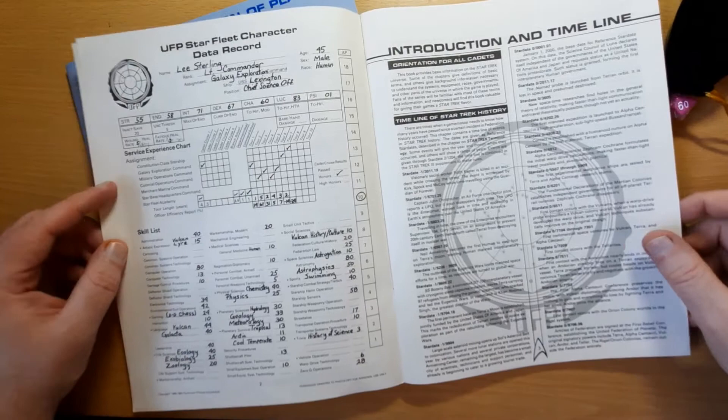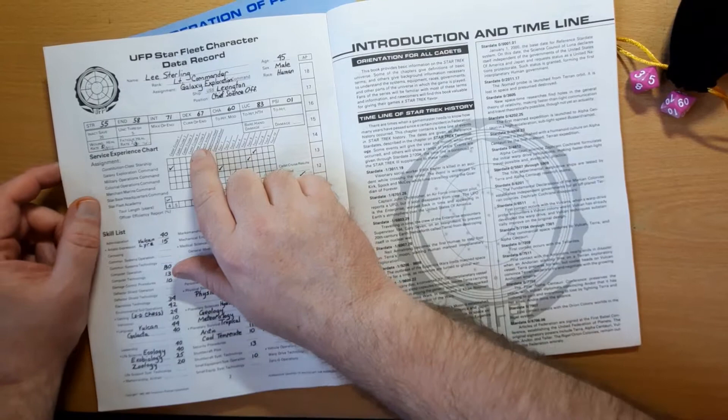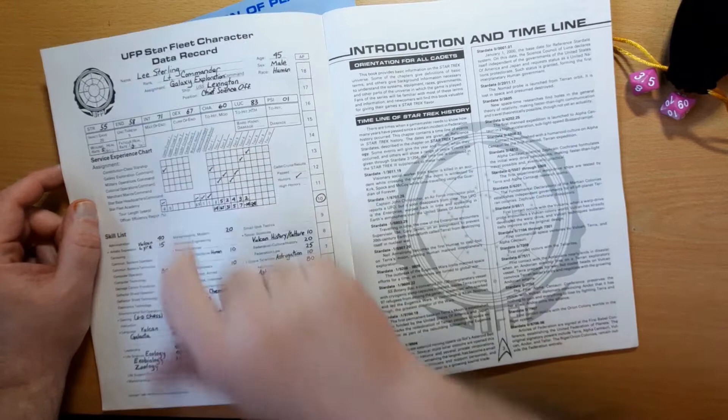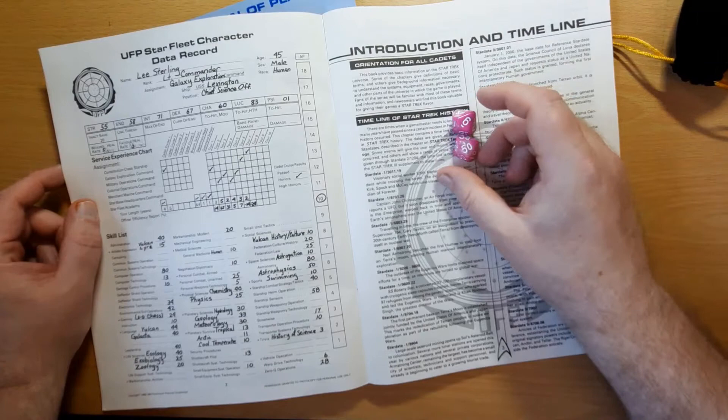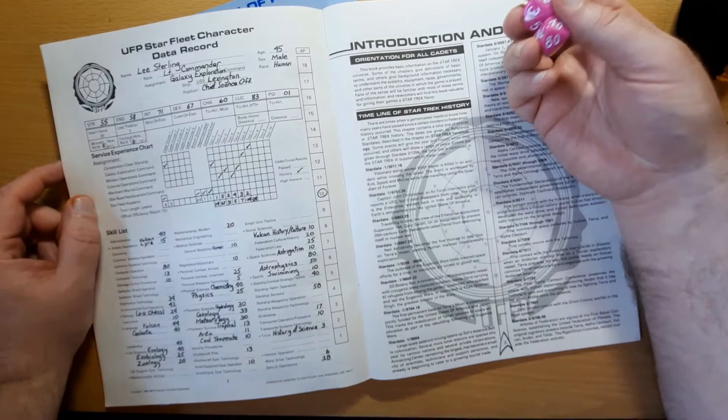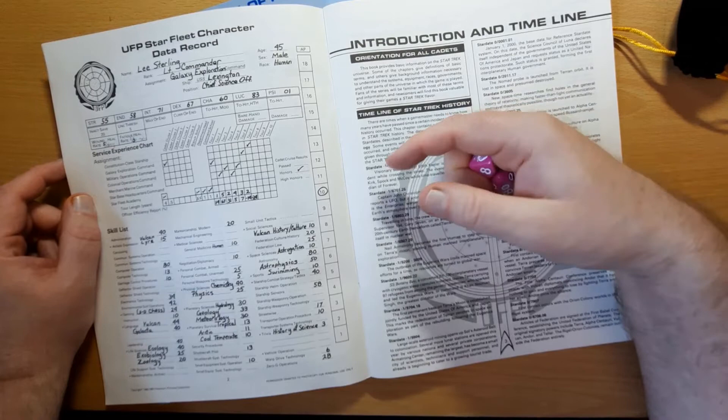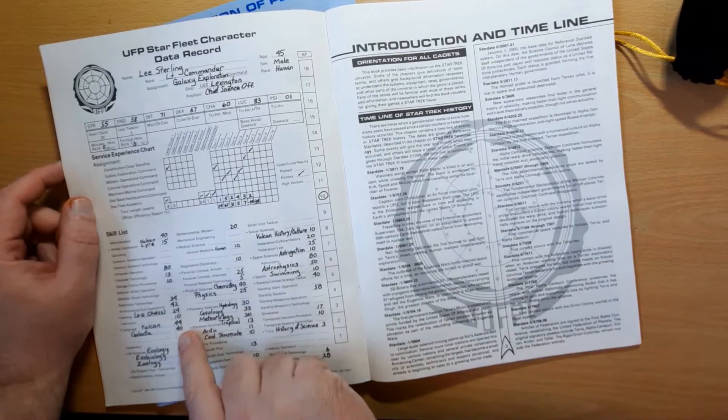Now for skills, there are a few different rules. If you're rolling against an attribute, then it's a percentile roll against the attribute. So you're rolling against somebody's intelligence for figuring something out. You roll and we've rolled a 56, which is under his attribute, so he succeeds. In the rules, these are called saving throws, because usually when the character is trying to do something, they're going to use their skills.